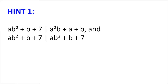Hint number 1. From the question we know that ab² + b + 7 divides a²b + a + b. We also know that an integer divides itself if it's not 0, and so ab² + b + 7 divides ab² + b + 7. How can you develop on this fact to go forwards with the problem?